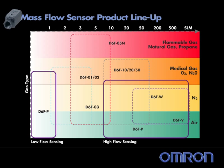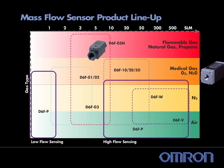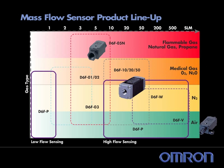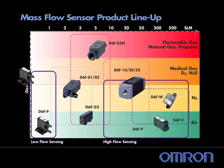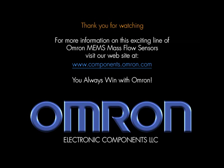OMRON's product lineup includes a full line of MEMS mass flow sensing products available for a wide variety of gas flow measurement applications. In addition to what's shown here, OMRON's factory will consider requests for custom calibrations to suit your requirements.